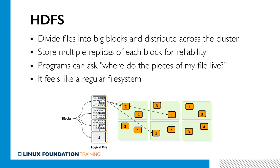HDFS actually stores blocks on different servers in a cluster. Multiple copies of the same block exist to achieve reliability. So if a server hosting a block fails or experiences a faulty hard drive, HDFS will still give you that data back — it will just have to read it from a different server in the cluster.